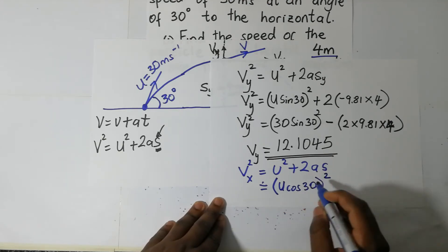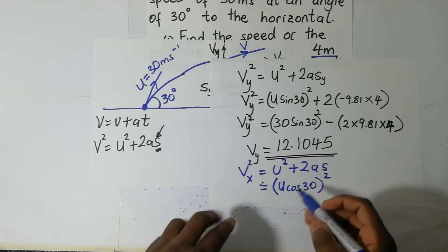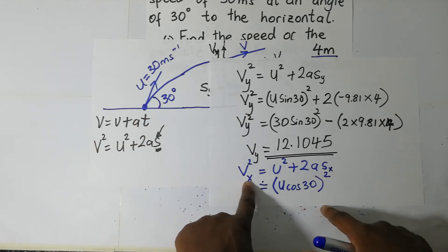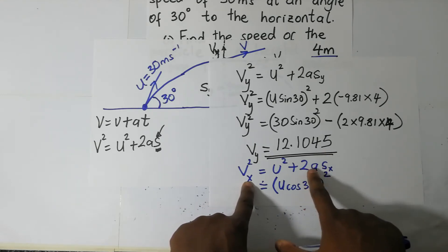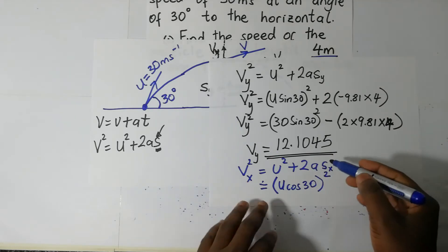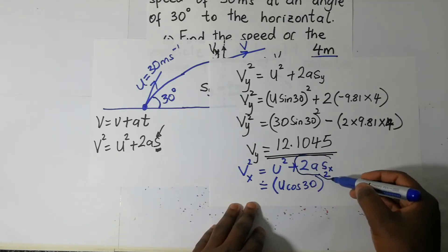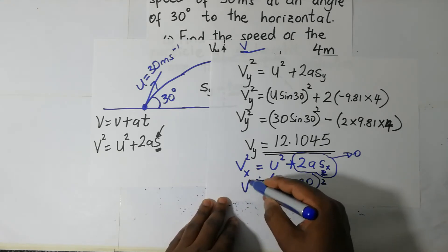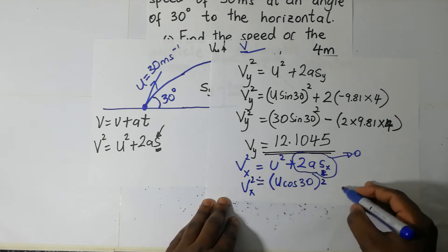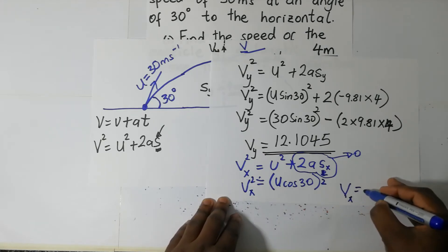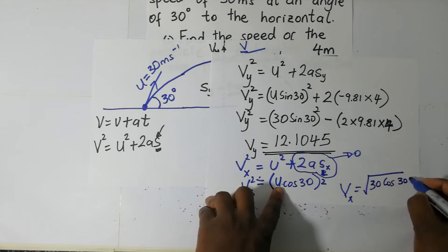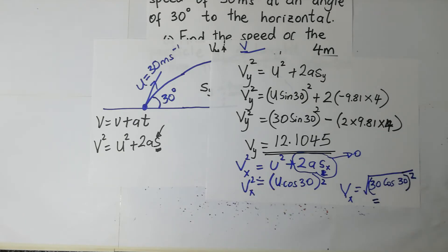The initial velocity in the x direction is U cosine 30, because 30 degrees is the angle, all squared. That is plus two times acceleration times displacement in the x direction. However, acceleration in the x direction is zero, so the entire term two times A times S becomes zero. Therefore Vx squared equals U cosine 30 squared, giving us Vx equals the square root of 30 cosine 30 squared.